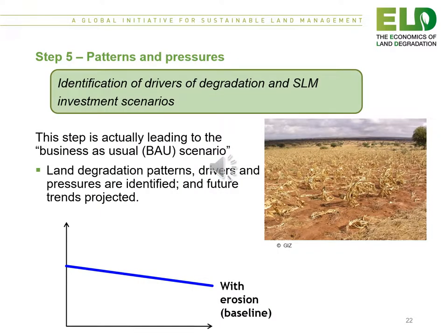Step five is on patterns and pressures. It involves the identification of drivers of degradation and the sustainable land management investment scenarios. This step leads to building the business as usual scenario. Land degradation patterns, drivers, and pressures are identified and future trends projected, as shown in the figure.